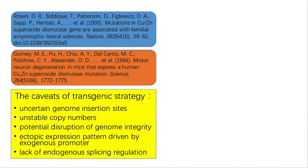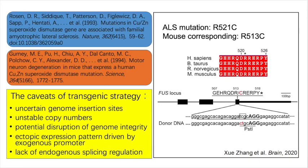Besides, the transgenic approach also has other caveats. To reflect the disease nature, patients often carry a non-synonymous mutation instead of overexpression. Here, we selected one of the most frequent ALS FUS mutations, R521C, to generate a knock-in ALS mouse model.